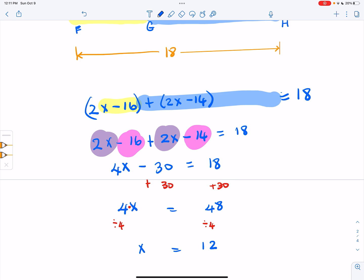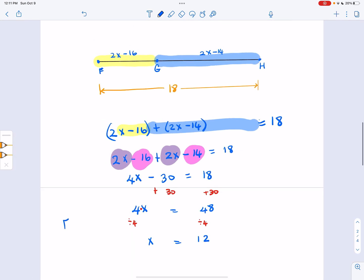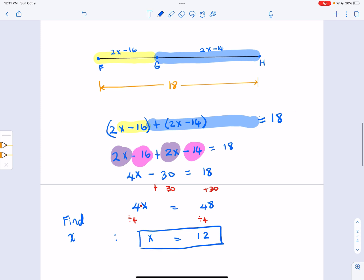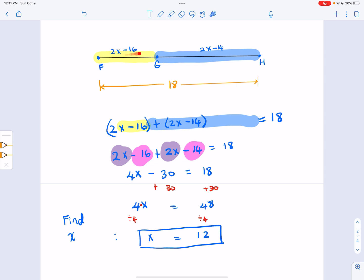So now, I didn't actually ask a question here. If the question was find x, then the answer would be x equals 12, and we'd be done. However, if the question asked what is the length of segment FG, then you would take the x and plug it in here to find your answer. If the question was what's the length of segment GH, you'd take the x and substitute it in here to find the answer. All right, but all I wanted was the value of x, so we're done.